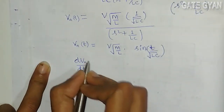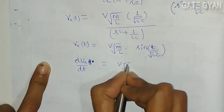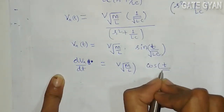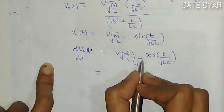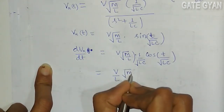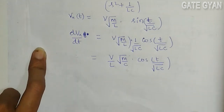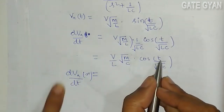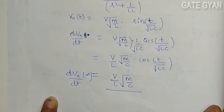So dVA/dt will be: dVA/dt = V·√(M/L)·(1/√(LC)) · cos(t/√(NC)), which simplifies to (V/L)·√(M/C) · cos(t/√(MC)). Now at t equal to 0 plus, I will put t=0, so cos(0) becomes 1. Therefore, dVA/dt at t=0 plus is equal to (V/L)·√(M/C). This is our final answer. Thank you.